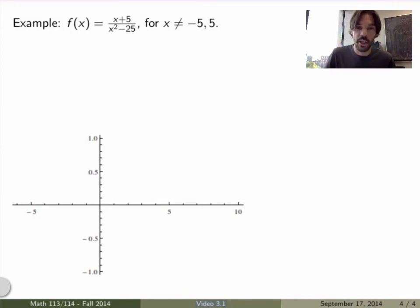Well, so before we draw the graph, we can try to simplify this function a little bit. So what we realize is that the denominator here is a difference of squares, so I can actually write the function as follows. So the denominator simplifies as (x+5) times (x-5).